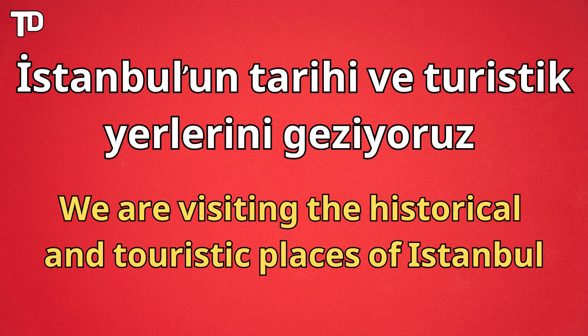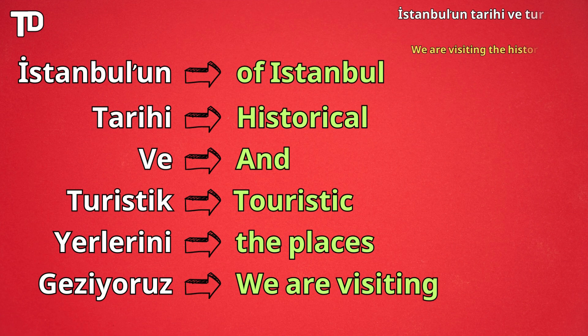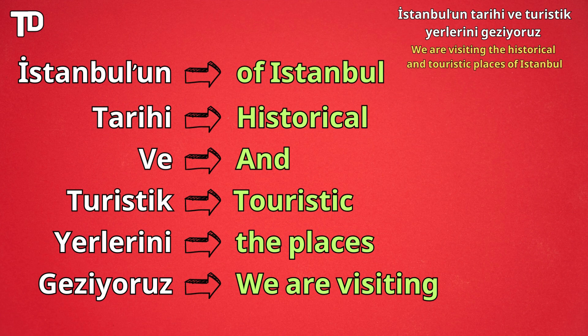We are visiting the historical and touristic places of Istanbul. I will translate word by word: istanbul un — of Istanbul; tarihi — historical; ve — and; turistik — touristic; yerlerini — places; geziyoruz — we are visiting. So the full sentence is: istanbul un tarihi ve turistik yerlerini geziyoruz.